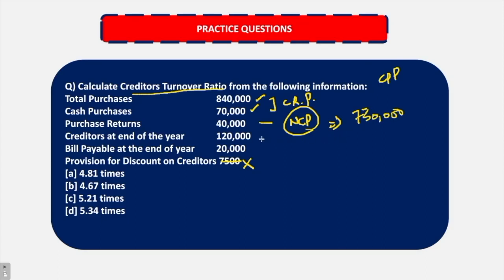Upon average payable - creditors at the end of the year, average payable and BP at the end of the year, both are added in order to find out the average payable, which will be 1,40,000. Now because at the end of the year are given, we do not have BP at the starting of the year and creditors at the starting of the year. Therefore, we are not going to divide it by 2.